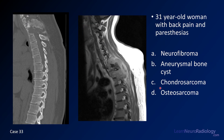Case 33 is a 31-year-old with back pain and paresthesias. Here you have a CT sagittal through the thoracic spine and a single MR image through the cervical-thoracic junction — a T1 weighted image. Your choices are neurofibroma, aneurysmal bone cyst, chondrosarcoma, or osteosarcoma.